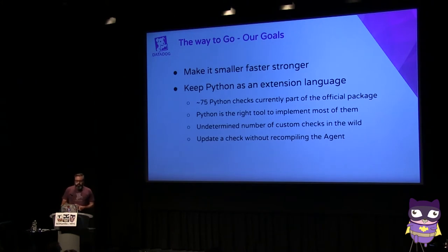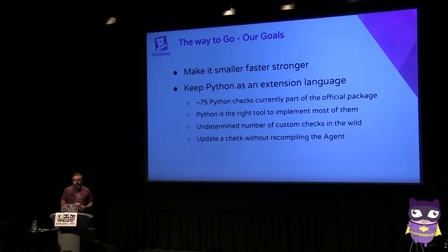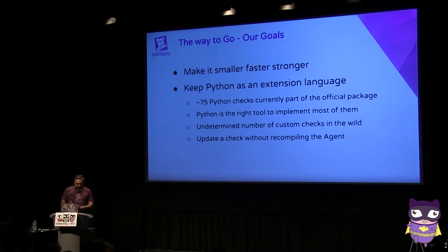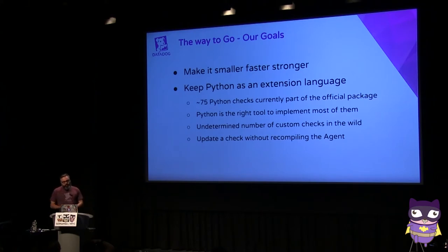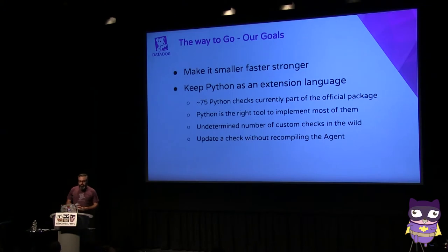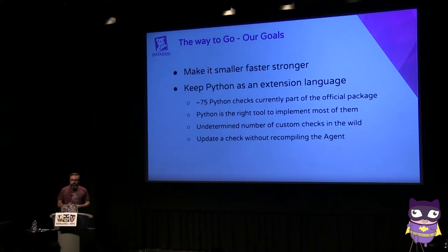It has to be smaller and faster — smaller in memory footprint and resource usage, and faster in collecting and forwarding metrics. Another blocking requirement was we need to keep Python around. That's mainly because we have about 75 Python checks that we don't want to rewrite from scratch. Also, Python is the right tool for implementing most of them. Customers can also write their own custom checks in Python and the agent runs those. We couldn't go to customers and say you have to port your Python code to Go, or that any change requires recompiling the entire agent as a fat binary. So no way — we have to keep Python around.